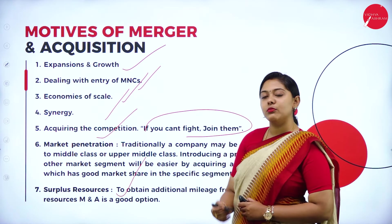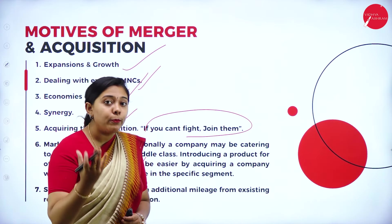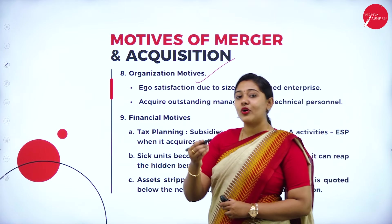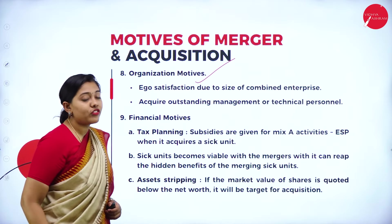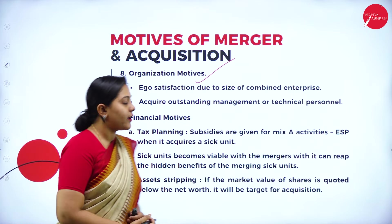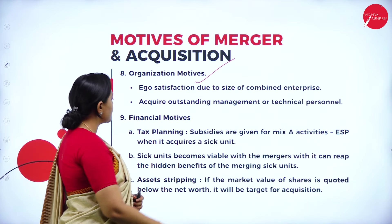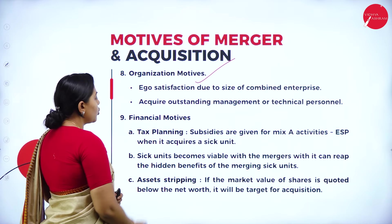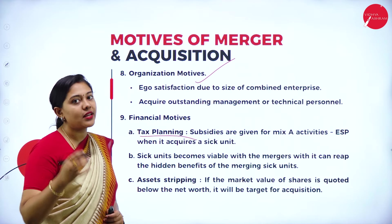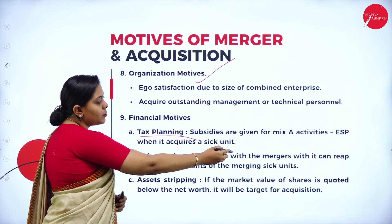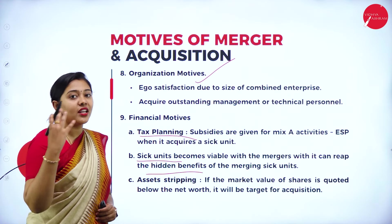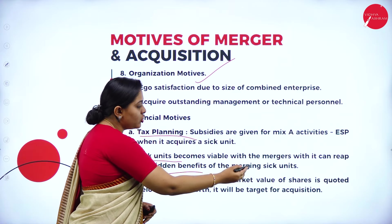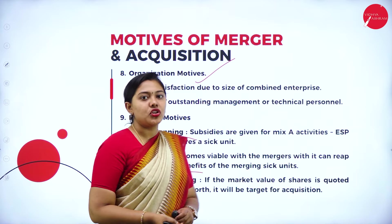Next motive is surplus resources — optimum utilization of resources and surplus funds can be done. There is also an organizational motive for ego satisfaction — due to the size of the combined enterprise, they go for merger and acquisition. To acquire outstanding management or technical personnel and avail human resources, merger and acquisition will happen. Financial motives include tax planning for tax benefits, subsidies, and sick units becoming viable with merger — the hidden benefits can be reaped. If the market value of share is quoted below net worth, it becomes a target for acquisition — this is called assets stripping.